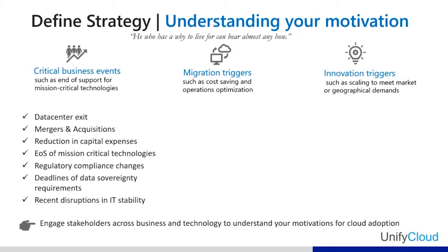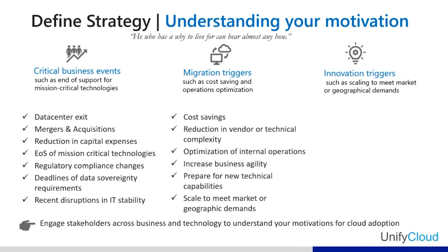The second motivation category is migration triggers. These are not critical business events, but business drivers such as cost saving, reduction in vendor or technical complexity, optimization of internal operations, increased business agility, preparation for new technical capabilities, or scaling to meet geography demands. These are the migration triggers, and it's easy to recognize them and link them to specific business outcomes.